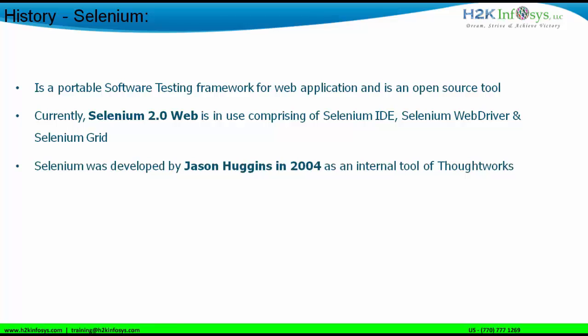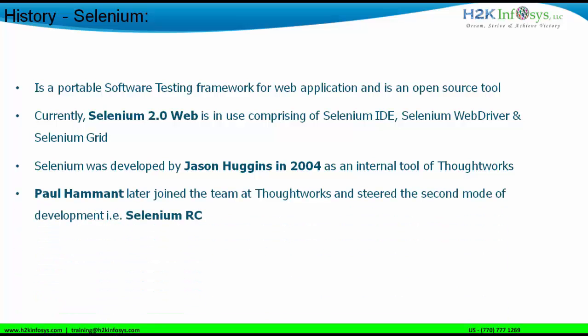Selenium was actually developed by Jason Huggins in 2004. He was one of the developers of this tool, working at ThoughtWorks, where he created it as an internal tool. Later, a person called Paul Hammond joined the team at ThoughtWorks and steered the second mode of development — Selenium RC. The full form of RC is Remote Control.